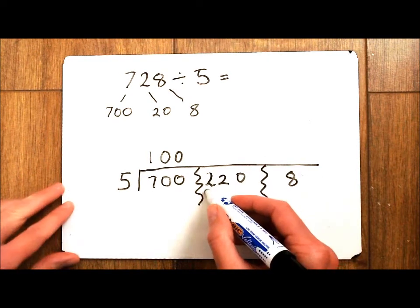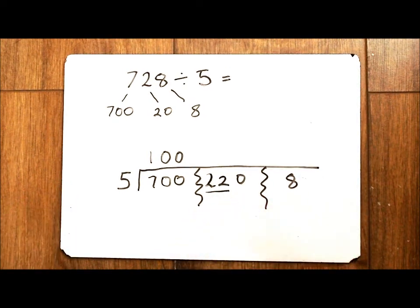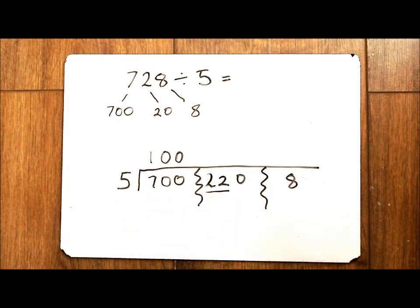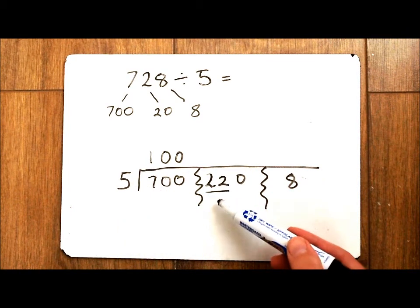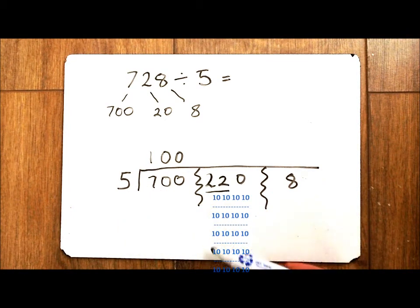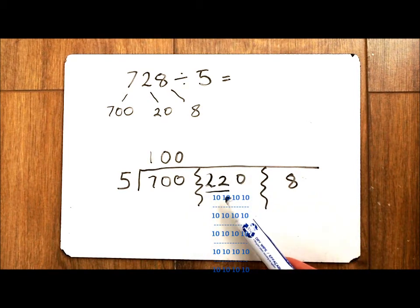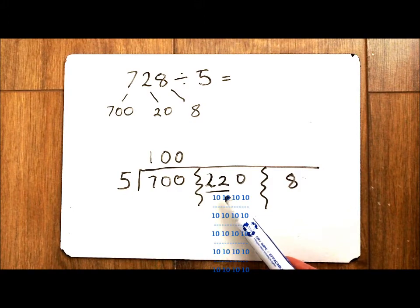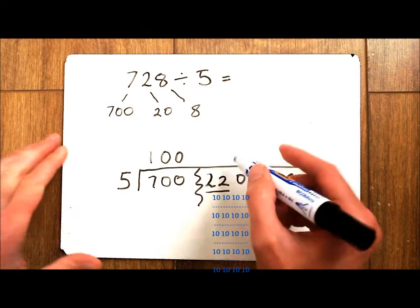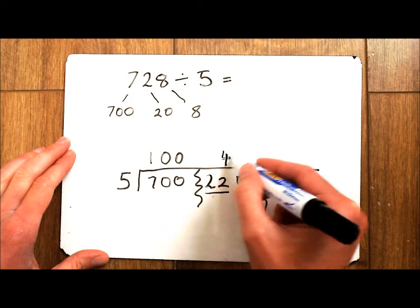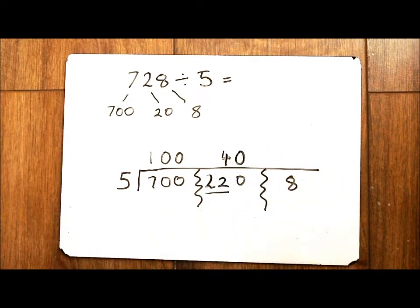I now have 22 tens to share out equally among my 5 groups. So again if you're using the other method you draw it down below. I'm going to do it in my head. So I know that if I shared out those 22 tens I would have 4 tens or 40 in each of my 5 groups.